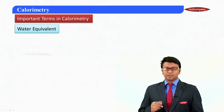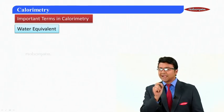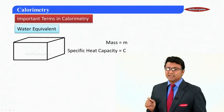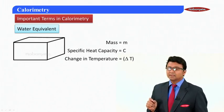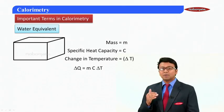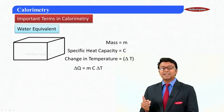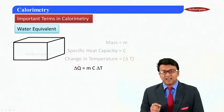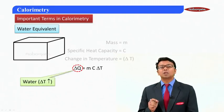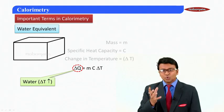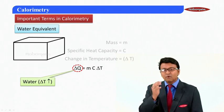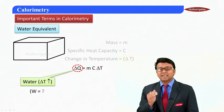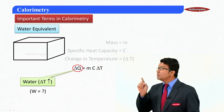So here we try to understand what exactly is meant by water equivalent. Let's say we have a block whose mass is m and its specific heat capacity is C and the change in temperature is ΔT. So how much heat will be related to this particular block? ΔQ = mC ΔT. Now let's say the same amount of heat I use to raise the temperature of water by an equal difference. So the same amount of heat for raising the temperature of water by equal level, then how much water should I be taking? That is known as the water equivalent.